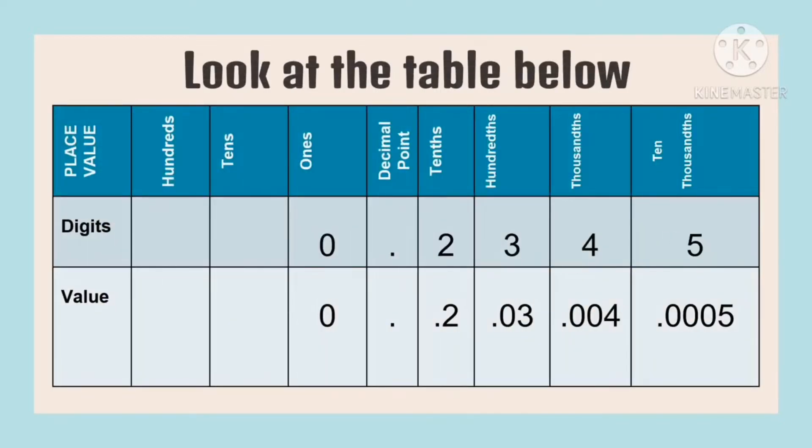The first row in the table shows the place values. You can see the place value of whole numbers and the place value of decimal numbers. How do we identify that a part is a decimal number? They are separated by the decimal point. To the right of the decimal point are decimal numbers, and to the left are whole numbers.